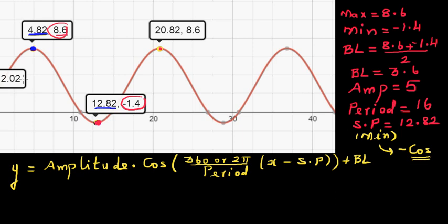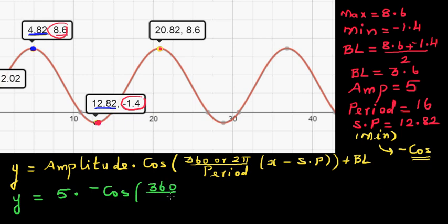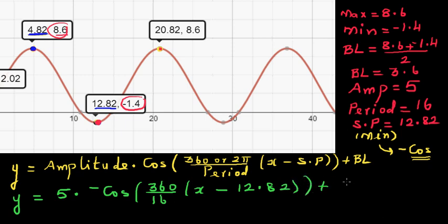Writing the equation — y is equal to your amplitude, which is 5, times negative cosine. I'll first do it in degrees. So this is 360 divided by the period, which is 16, times x minus the starting point, which is 12.82. We need to do a bit of simplifying. Plus the baseline, which is 3.6.